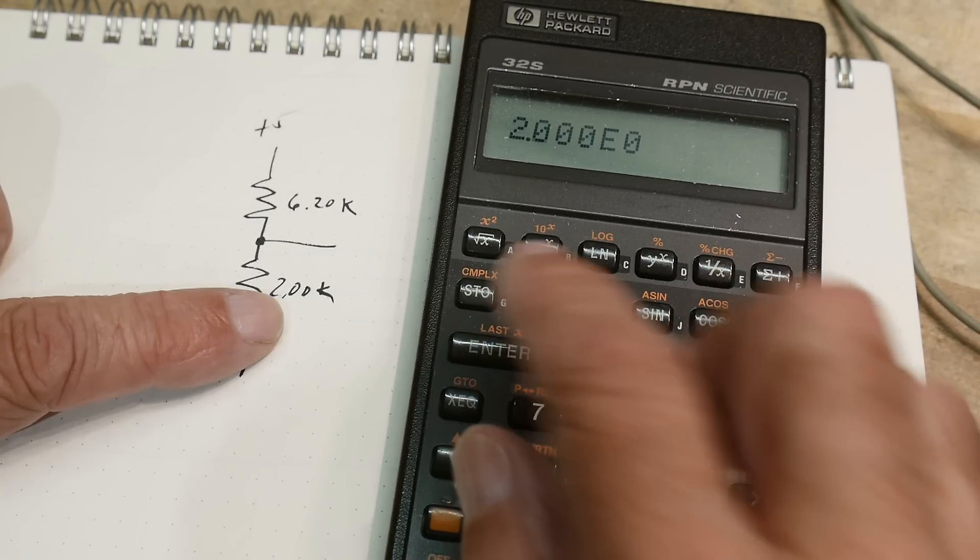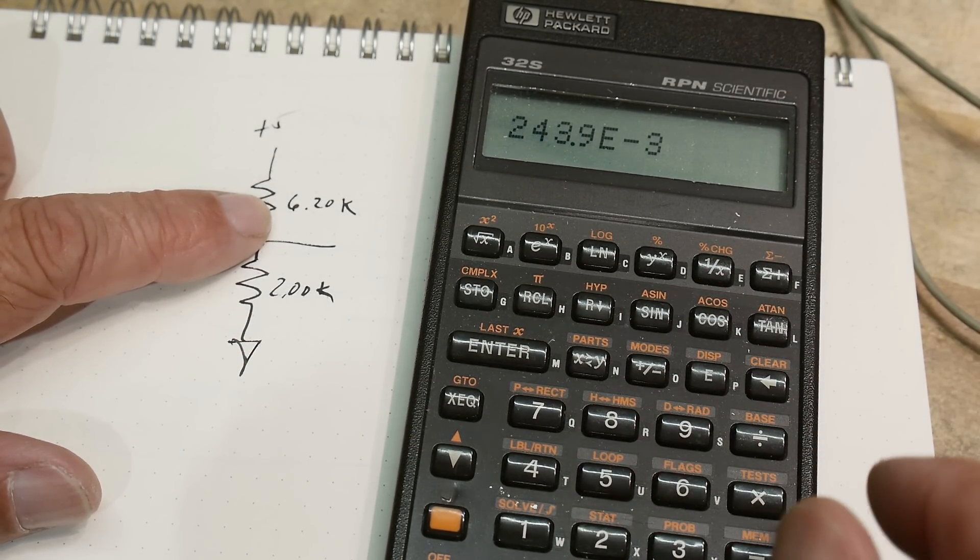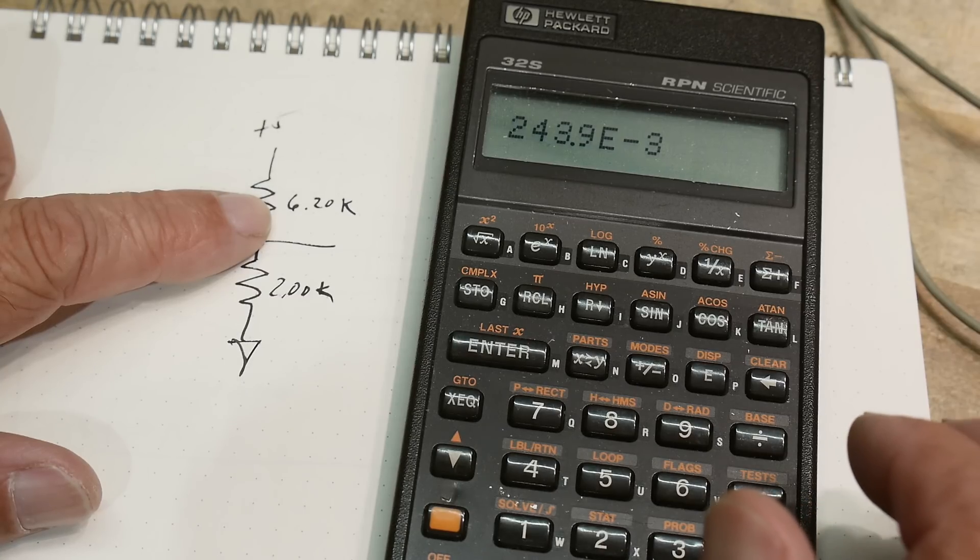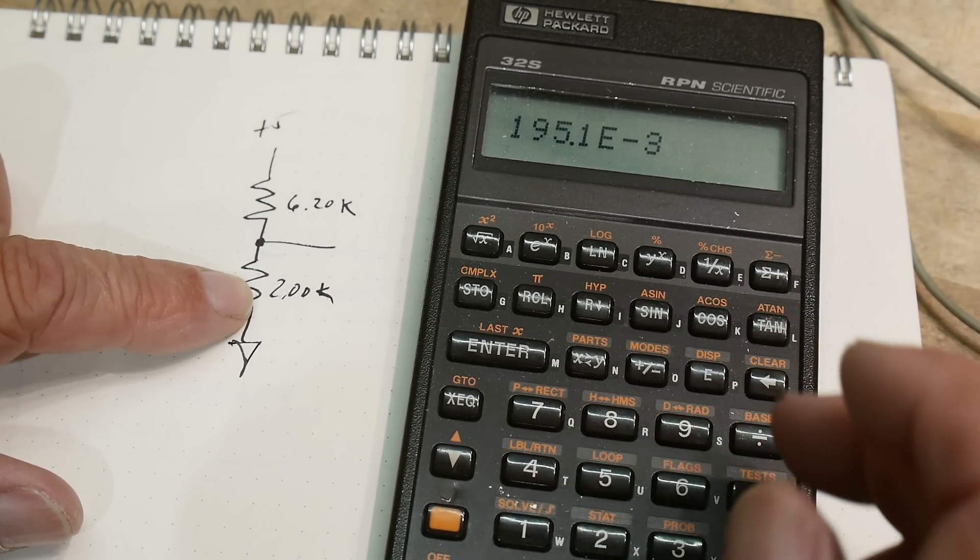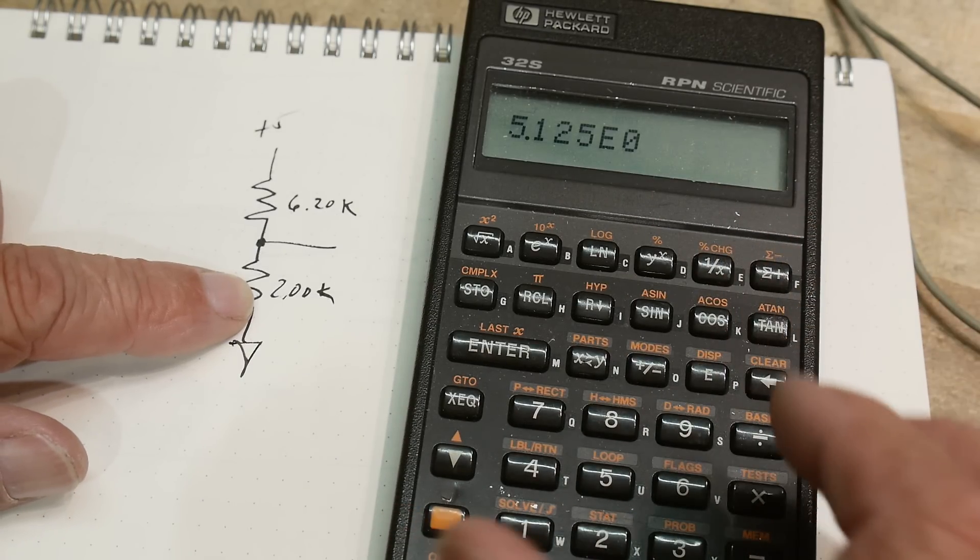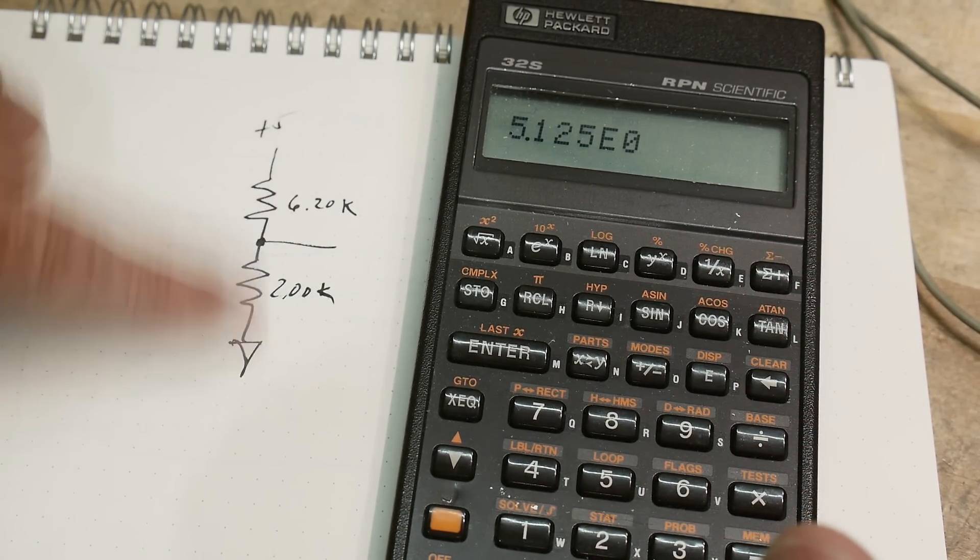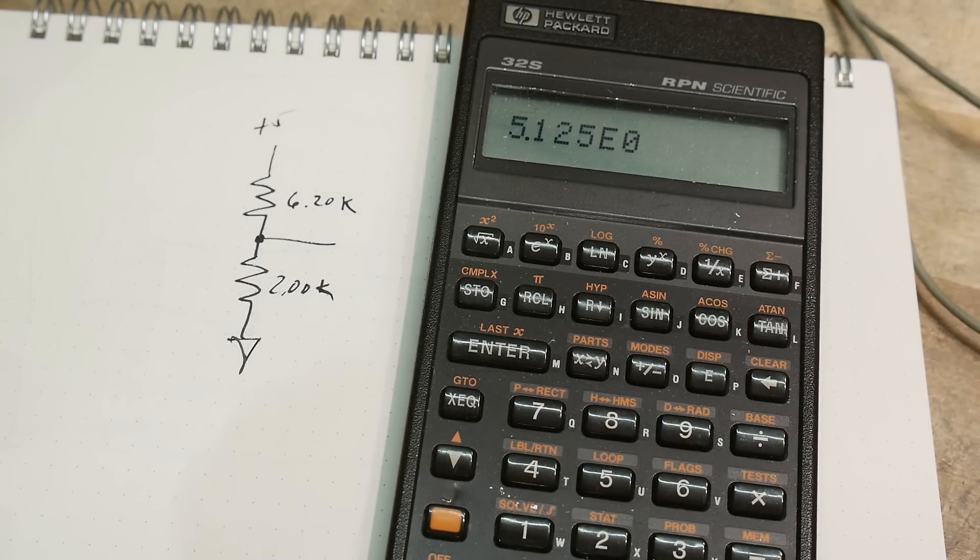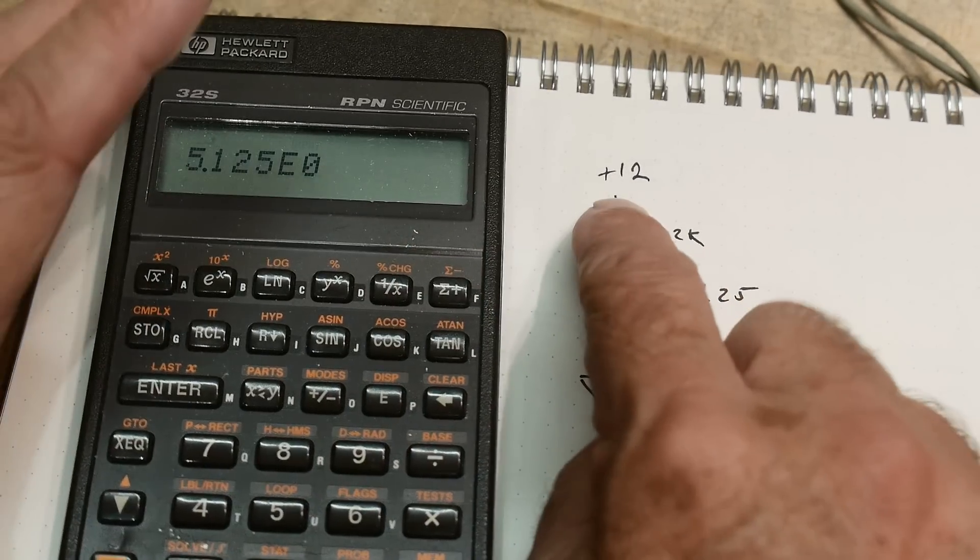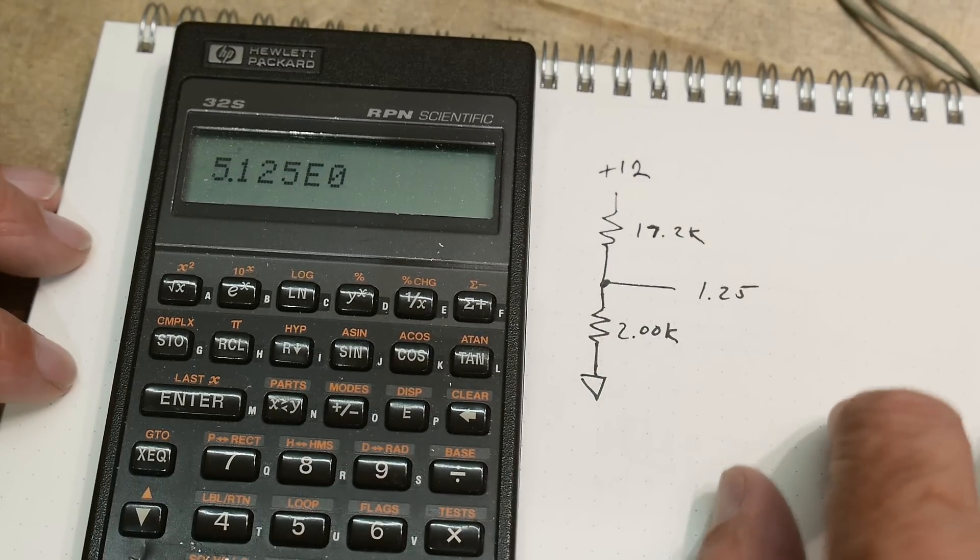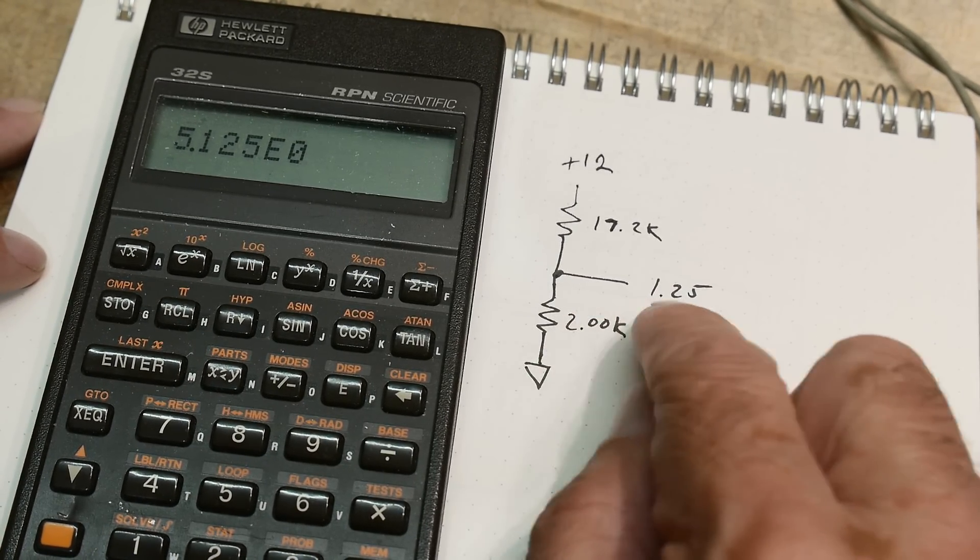So this is what's in there: a 6.2k and a 2k. So if I take 2 and 8.2 and divide that by 1.25 I get 5.125. So 5.125 is what this is set up to regulate to. I said what would it take to give me 12 volts, which is what I wanted, and I did the calculations.